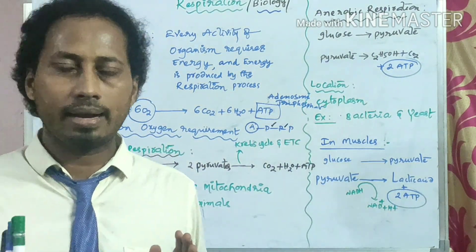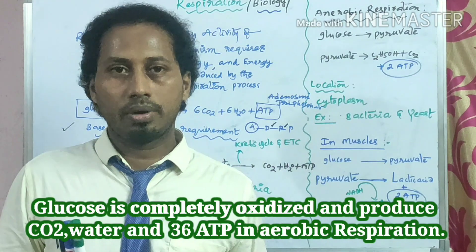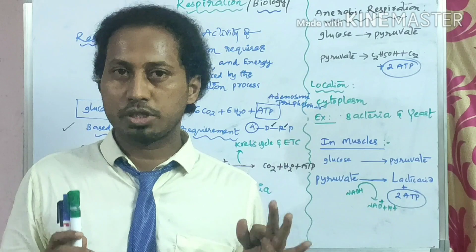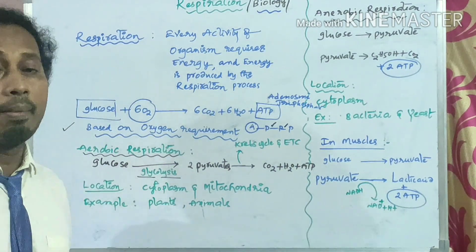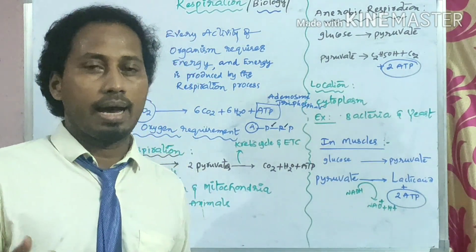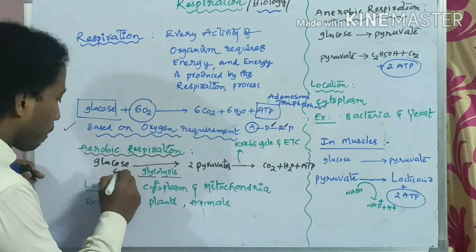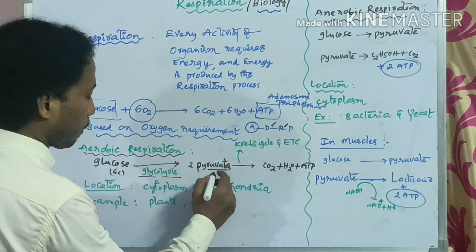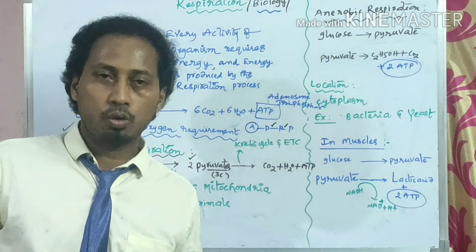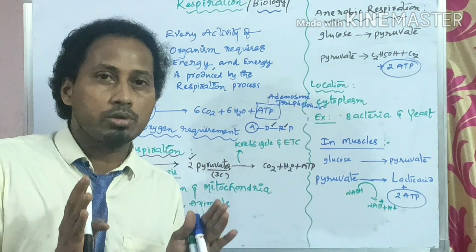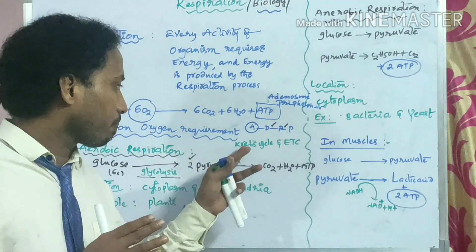Aerobic respiration has three steps: one is glycolysis, another is the Krebs cycle, and the third is the electron transport chain. Glycolysis means glucose undergoes lysis — glucose breaks down. It is a 6-carbon molecule that breaks down into two pyruvates, each being a 3-carbon molecule. This pyruvate then goes to the mitochondria and undergoes a series of chemical reactions discovered by Krebs, so we call it the Krebs cycle.